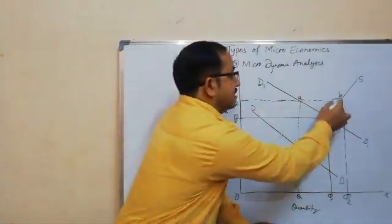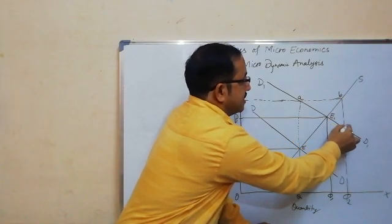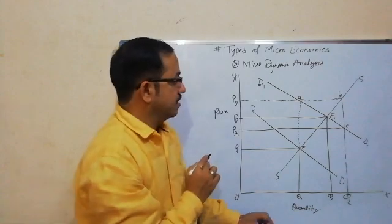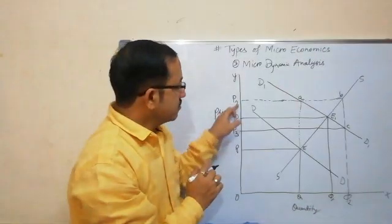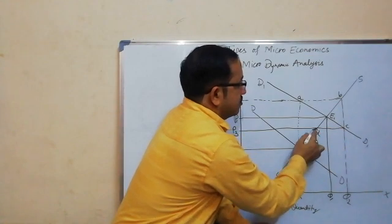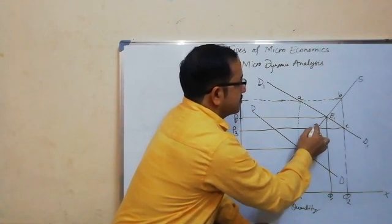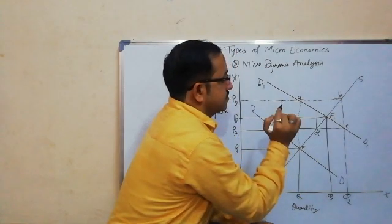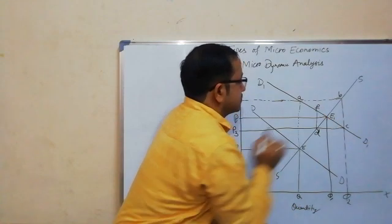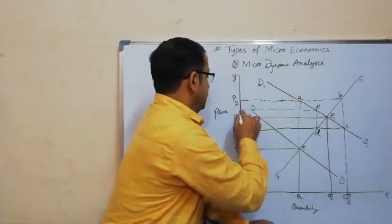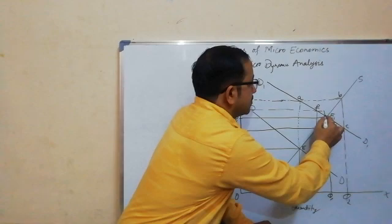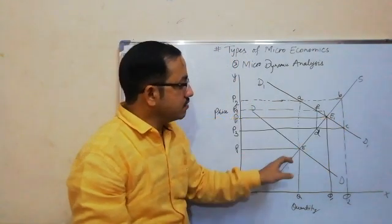When supply increases, it decreases the price by BC, so the price falls to OP3. Due to the fall in price, demand exceeds supply by CD. Due to higher demand, the price rises again to OP4. This process continues oscillating until the new equilibrium point E1 is achieved.